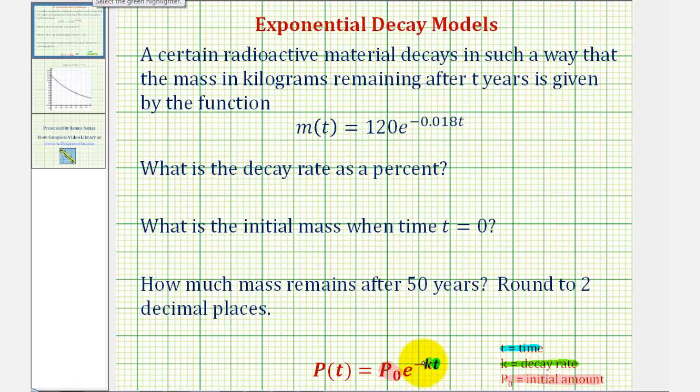The decay rate is k, so here the decay rate would be 0.018 expressed as a decimal. So we have k equals 0.018, but we're asked to express this as a percentage, so we multiply by 100 and add a percent sign.